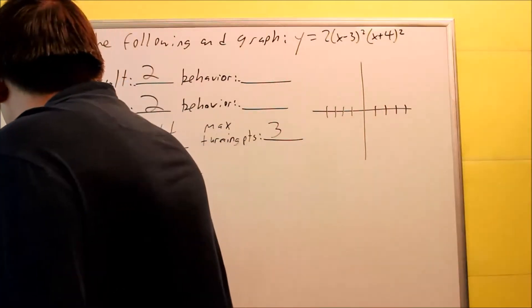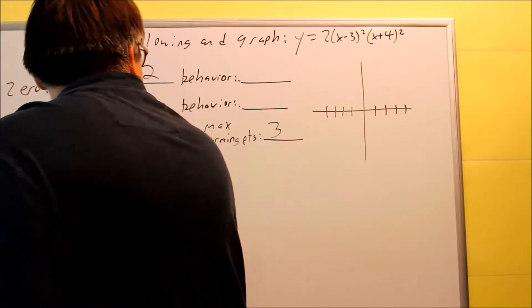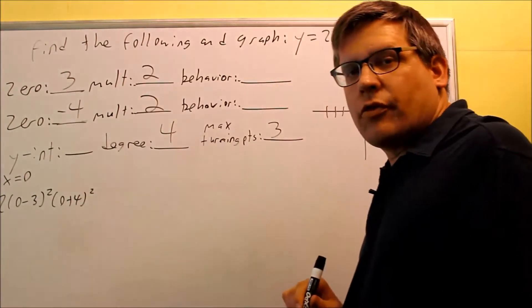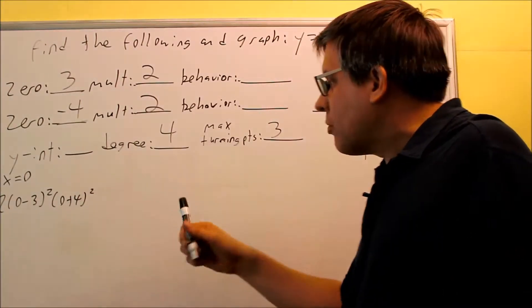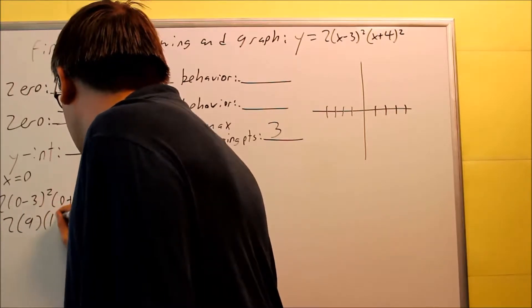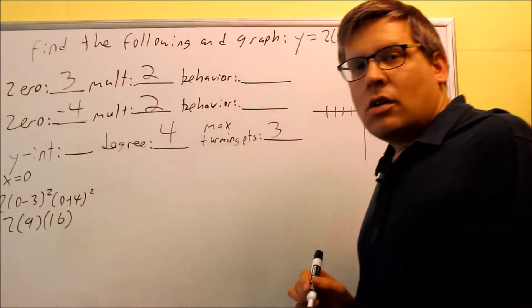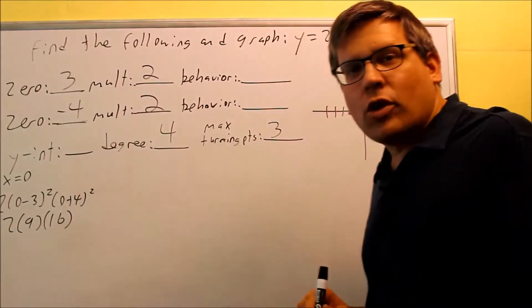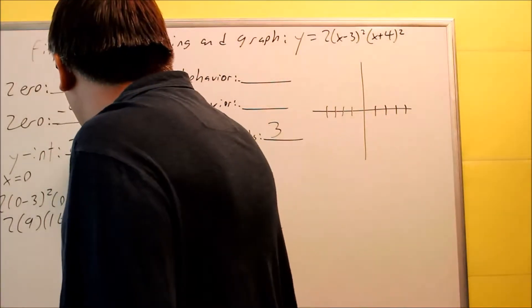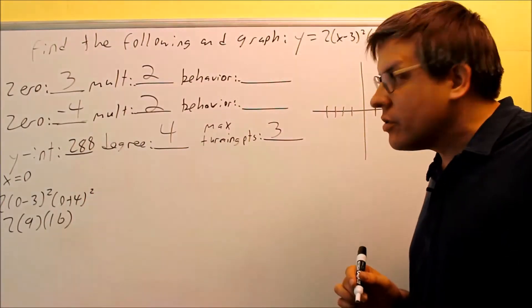So I'm going to do 2 times (0-3)² and (0+4)². So 0 goes in there for all the x's. We'll simplify it. 2 times 9 times 16. So that's going to be 144 times 2. It's going to be 288. So it's going to cross here, way up there at 288.